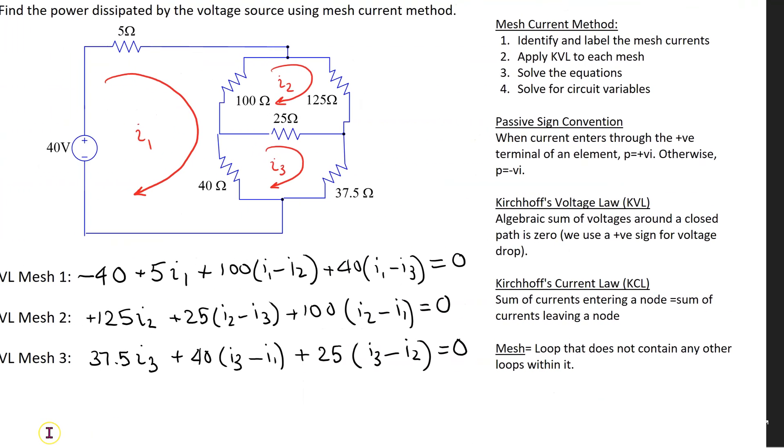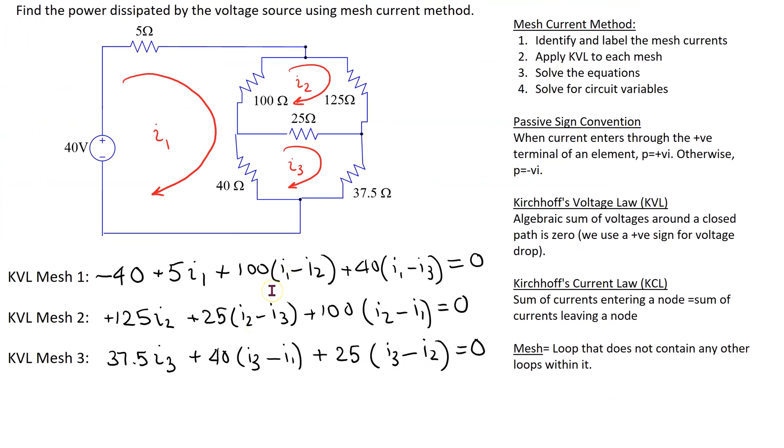Solving these equations we can show that I1 equals 1 over 2, which is 0.5 amps. I2 is 9 over 40, which is 0.225 amps, and I3 is 1 over 4, which is 0.25 amps.